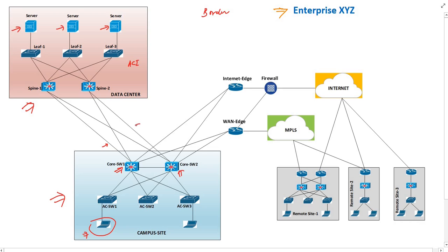For this enterprise network, the data center is located separately from the campus site. These routers or switches connect our campus to the data center over these links, so they have complete knowledge about data center and campus routes. Campus users also need to connect to the internet, so we have an internet edge router here providing internet connectivity. I have also connected a firewall, which can be used to block unauthorized access from the internet. We call this router the internet edge. Typically an enterprise has various remote sites or branches dispersed across geographic regions, and we have remote sites of various scales here.